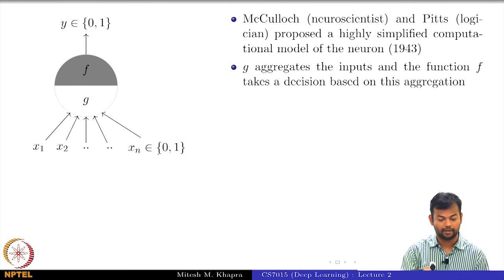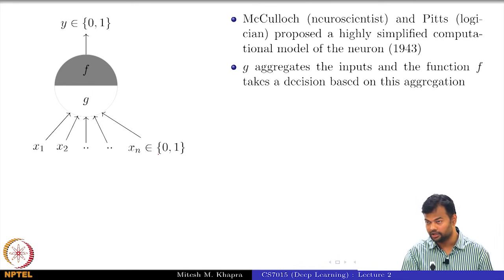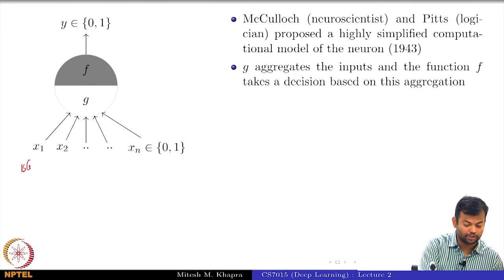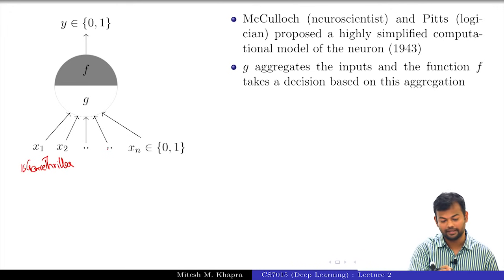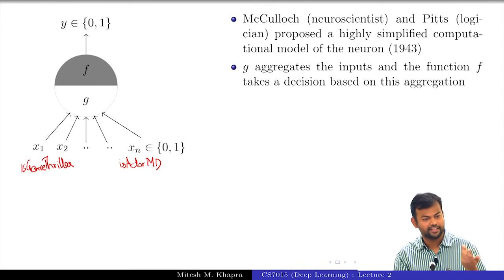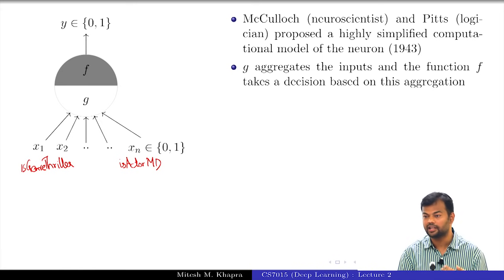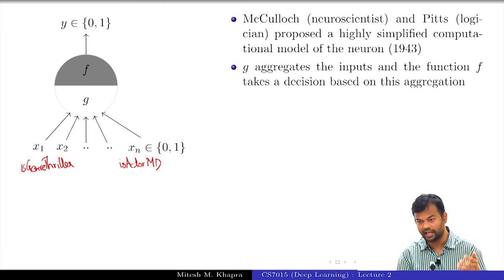Let us take a concrete example. Suppose I am trying to make a decision whether I should watch a movie or not. X1 could be 'is the genre of the movie thriller,' and similarly there could be another variable Xn which says 'is the actor Matt Damon.' There could be other factors: is the director Christopher Nolan, is the music given by someone, and so on. All these are factors which help me decide whether I want to watch this movie, and we want this neuron to help us make that decision.